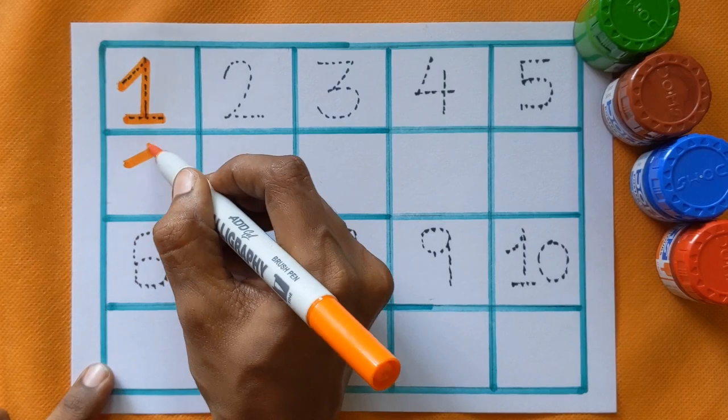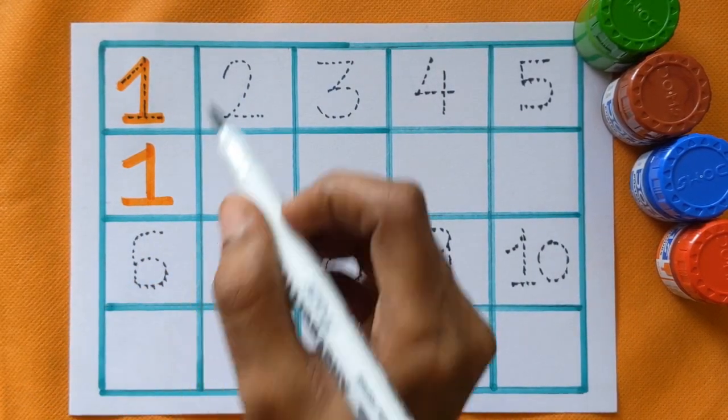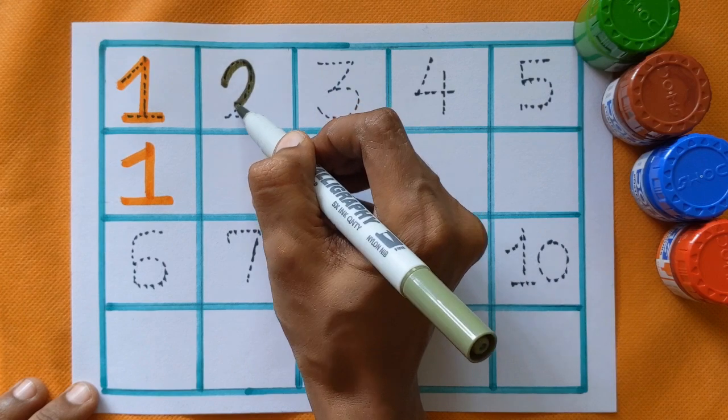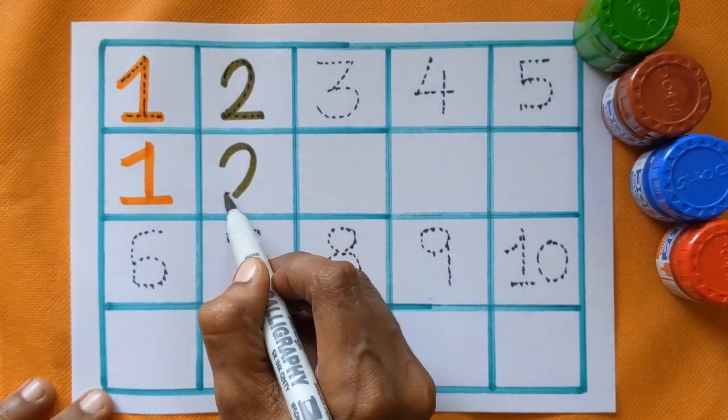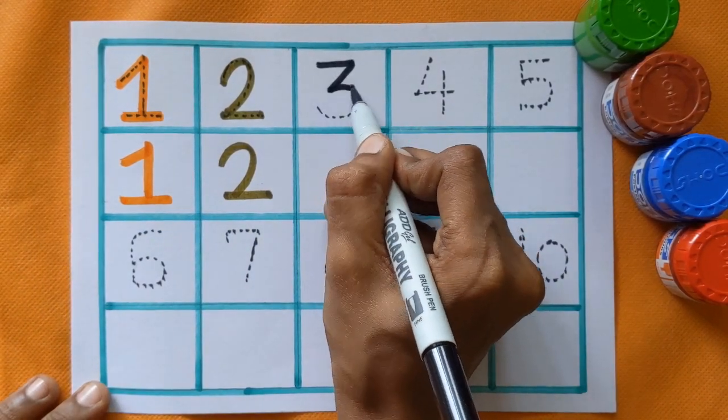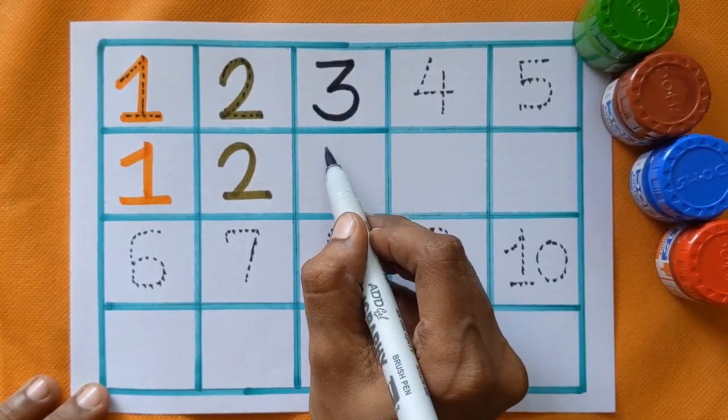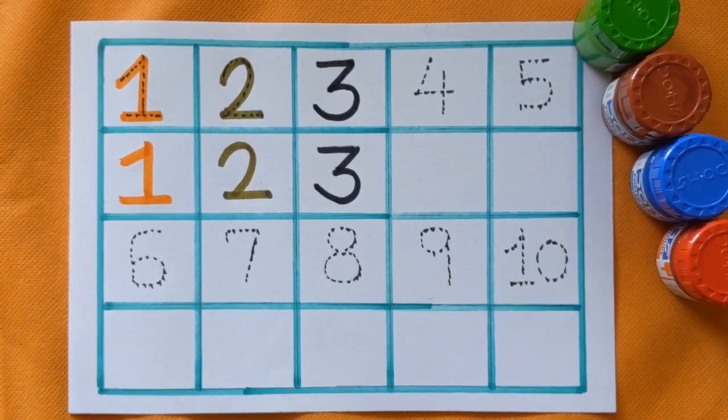1, 1 with the orange color. Next is number 2, number 2 with the olive green color. Number 3, number 3 with the black color.